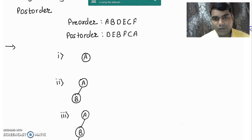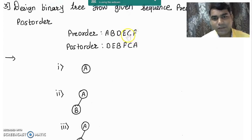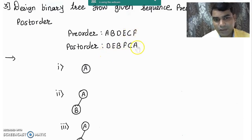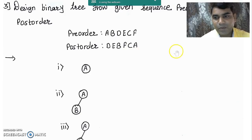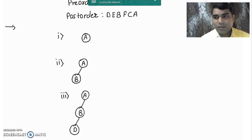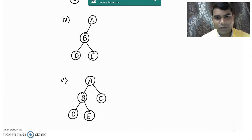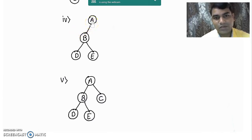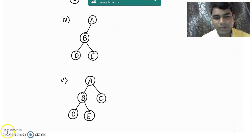Now we take the next element after E from the pre-order sequence, that is node C, and check it into the post-order sequence. In the post-order sequence it appears immediately before node A, meaning it is part of root node A. But in step number 4 the left subtree of A is already occupied. It means the coming element C must be placed to the right side of node A. So in step number 5 we draw node C towards the right side of node A.